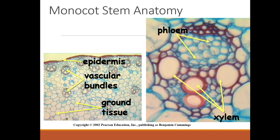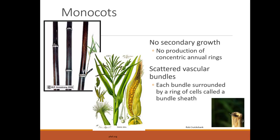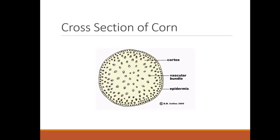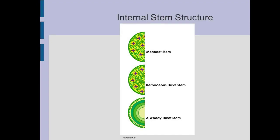Here's a close-up of monocot stem anatomy. You've got your epidermis, your vascular bundles, and the ground tissue. If you look closely at where the vascular bundle arrow is pointing, inside you will see the phloem above and then the xylem. Monocots have no secondary growth and no production of annual rings. They have scattered vascular bundles, and each bundle is surrounded by a ring of cells called the bundle sheath. Bamboo and corn are examples of monocots, and in a cross-section of corn you can see the vascular bundles run throughout the stem.